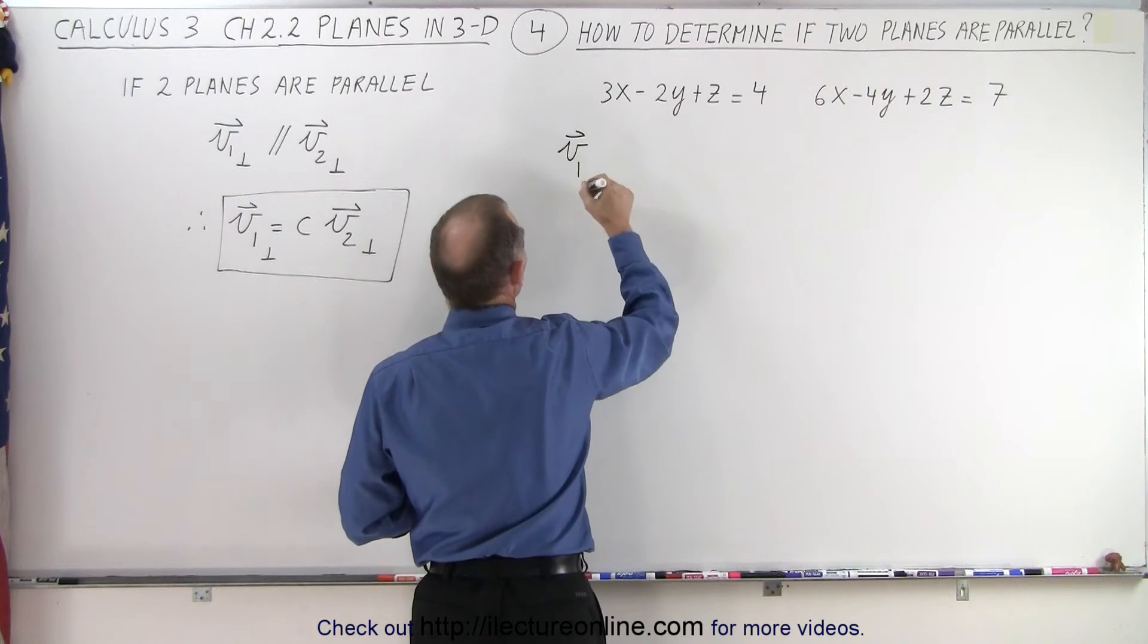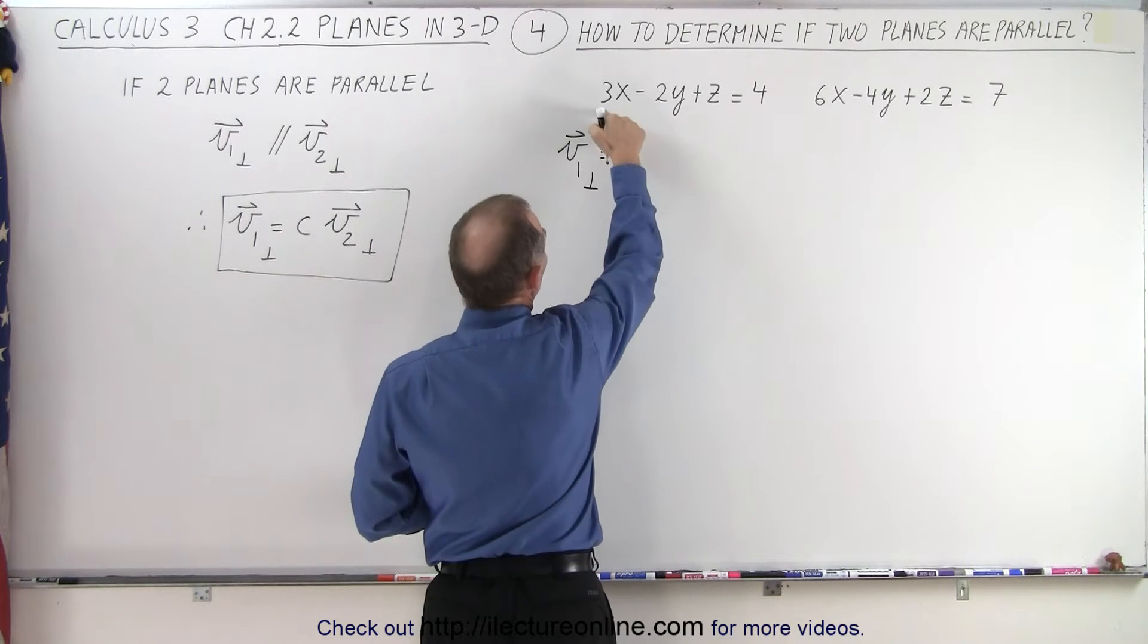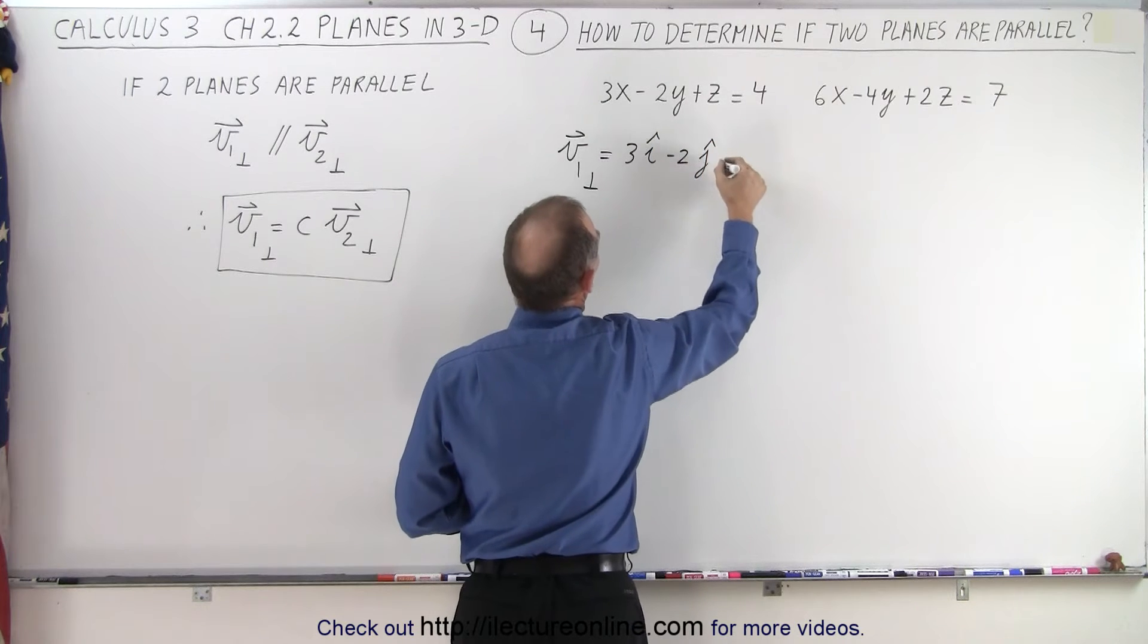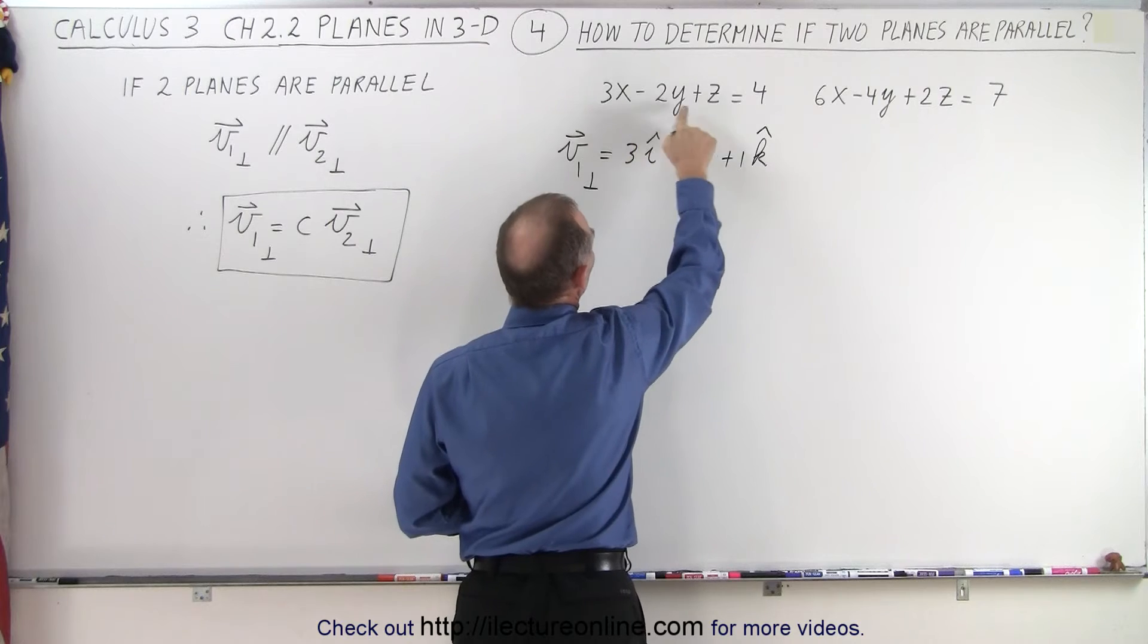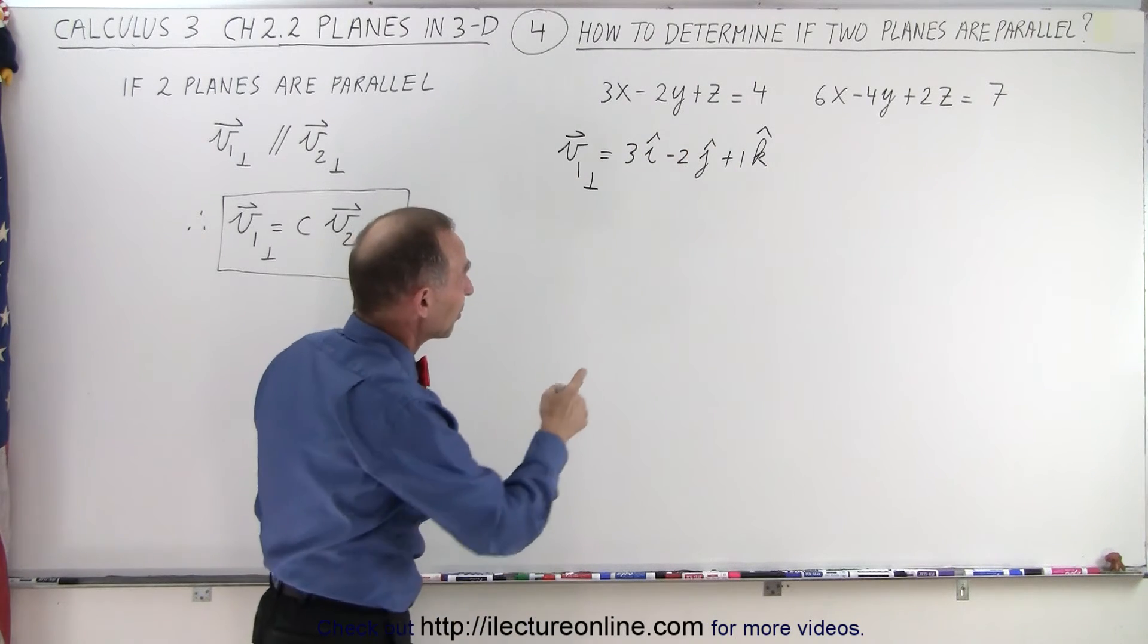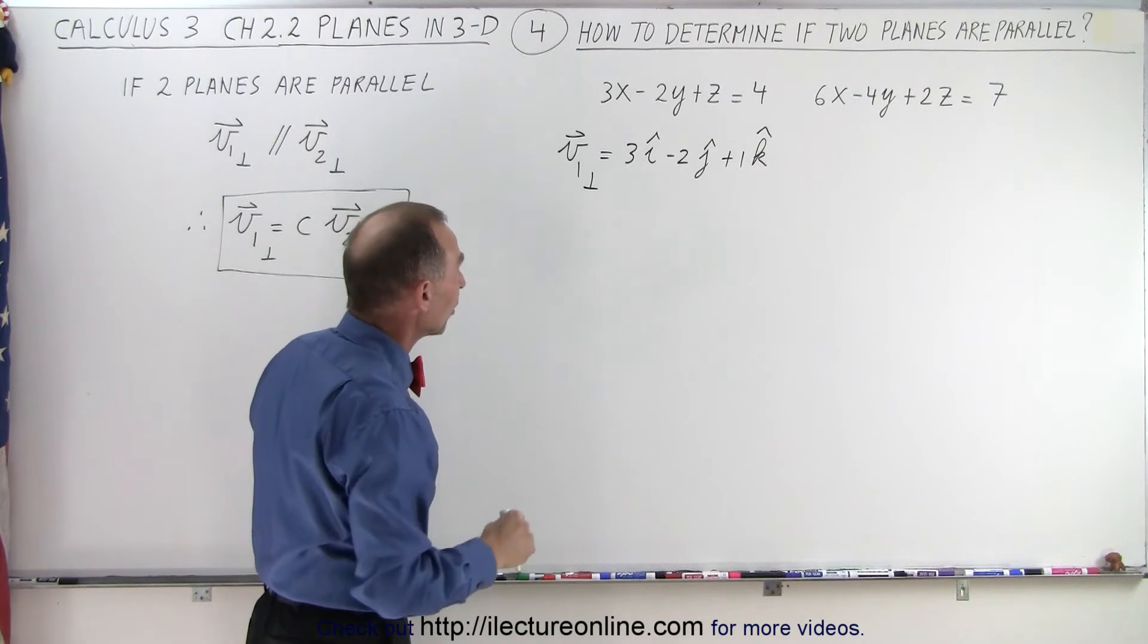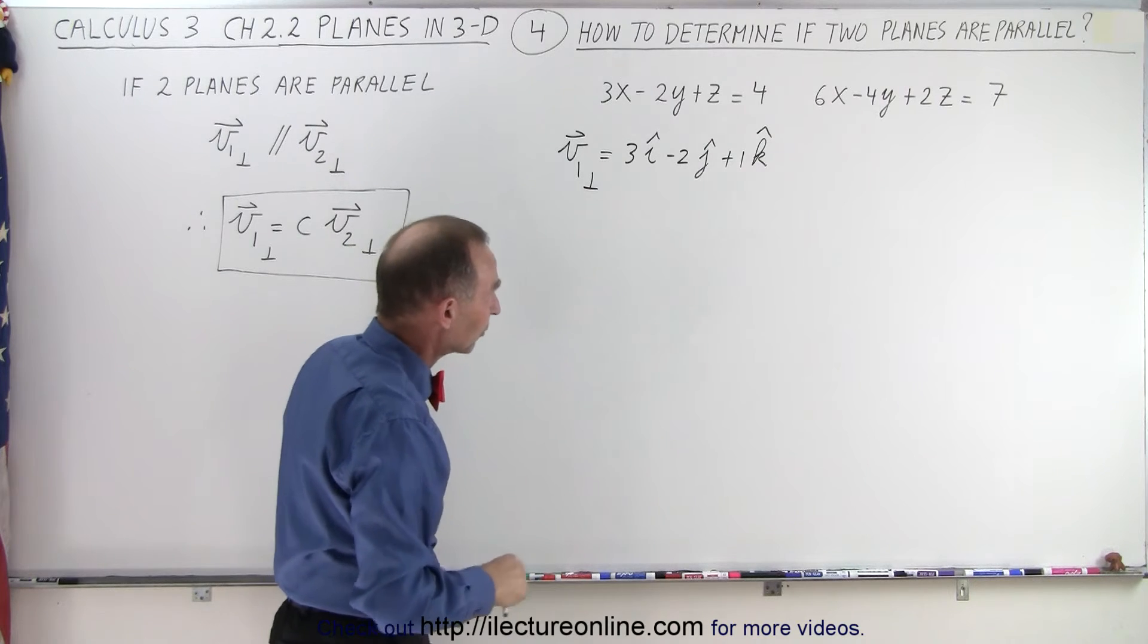So the perpendicular vector, let's call it vector 1, perpendicular to plane 1 is going to be equal to 3 in the i direction, minus 2 in the j direction, plus 1 in the k direction, because these are the magnitudes of the components. Also the direction, because there's a negative 2 right there. But essentially, if you take the absolute value of those numbers, those are the magnitudes of the components of the perpendicular vector.